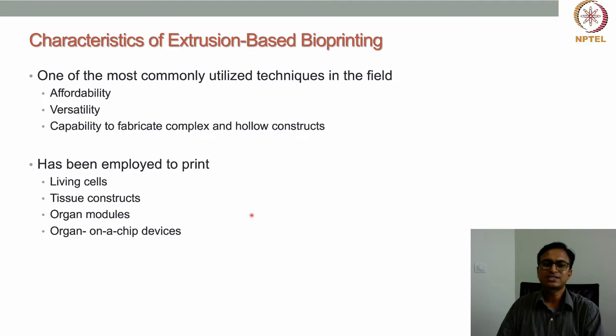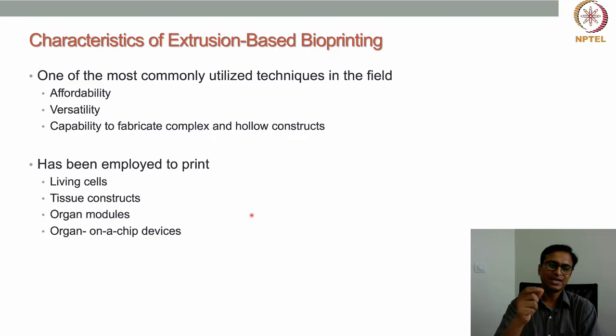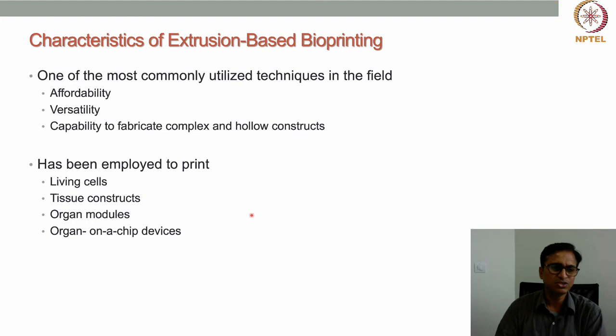Another important characteristic is the capability to fabricate complex and hollow constructs. Printing a complex construct is very challenging, but with extrusion-based bioprinting that possibility exists because we can design and control how the print head moves and how the material extrudes through the nozzle. More than one nozzle — two or three — can be used simultaneously to fabricate complex constructs. Hollow constructs can also be printed, which is why extrusion-based bioprinting is one of the most commonly utilized techniques in the bioprinting field.